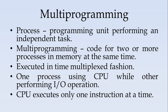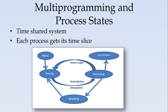Multiprogramming is executed in a time multiplex fashion, meaning even if there are two processes, only one process will be active at a time. It will be using the CPU while the other may be performing an IO operation or it may be blocked. The CPU executes only one instruction at a time. So multiprogramming is a time-shared system, meaning each process will get their time slices. One process will be running, then it will be suspended, and then the other process will be executing in the CPU.